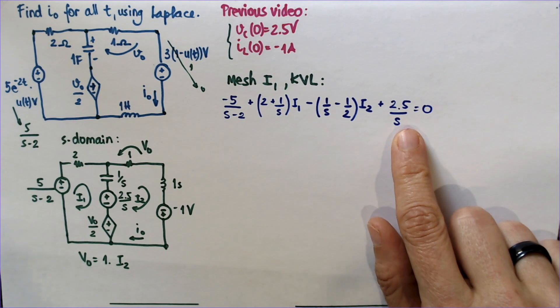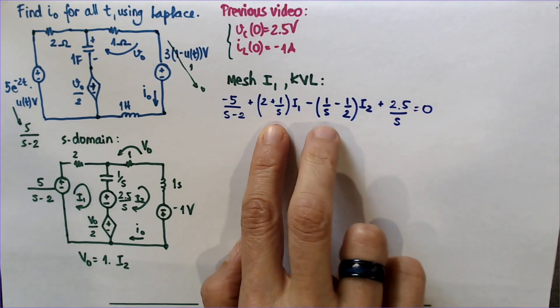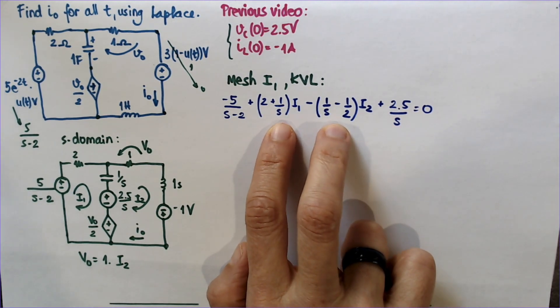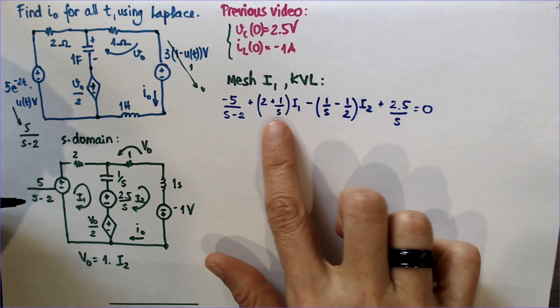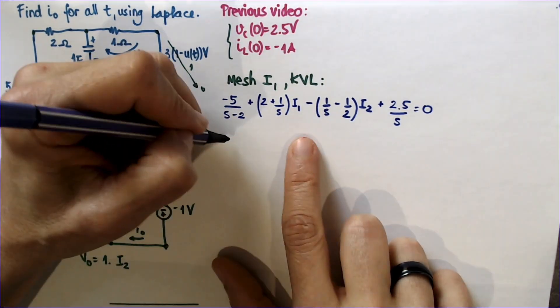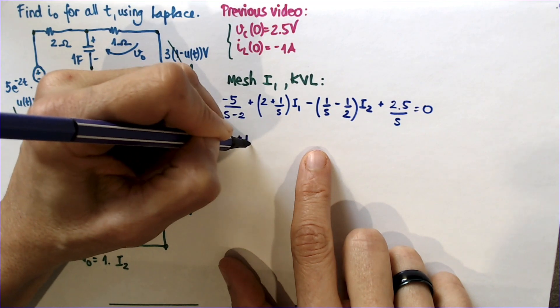So it should have really been plus V0 over 2. And then I'm still needing this guy here, plus 2.5 over s equals 0. So this is the first equation.